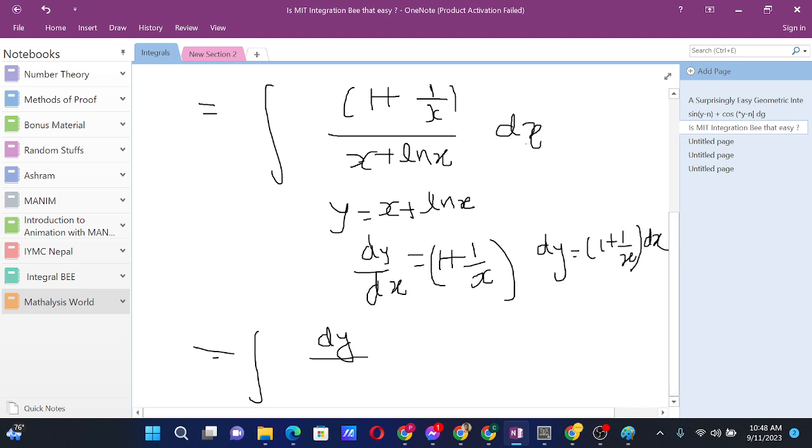This one is dy over the bottom one is y, so we get ln y + C. And since y is x + ln x, we have ln(x + ln x) + C. So this is our answer.